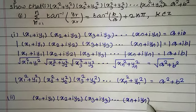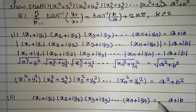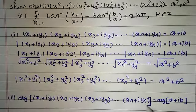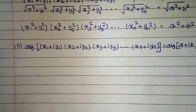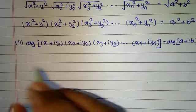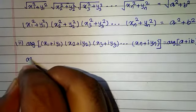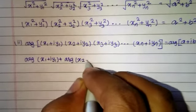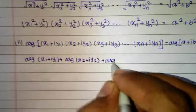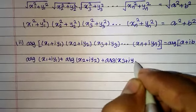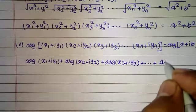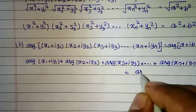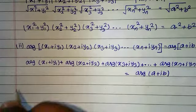Second proof. From xn plus iyn equals a plus ib, we take the argument of both sides. Using the property: argument of z1 into z2 equals argument of z1 plus argument of z2, we write: argument of x1 plus iy1 plus argument of x2 plus iy2 plus argument of x3 plus iy3 and so on,